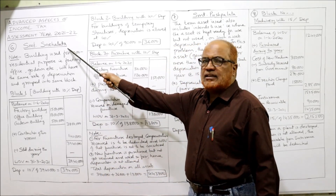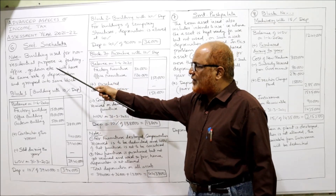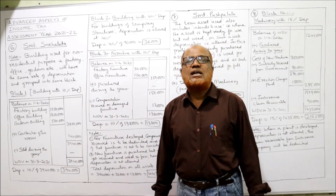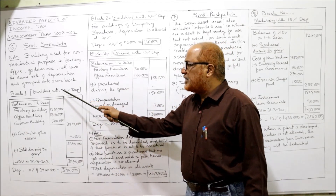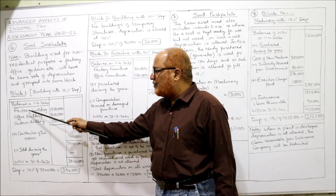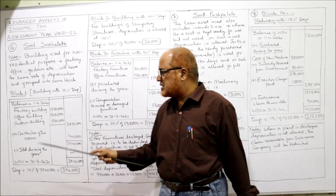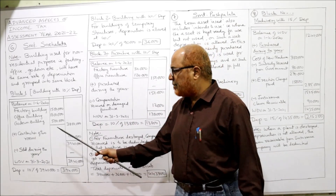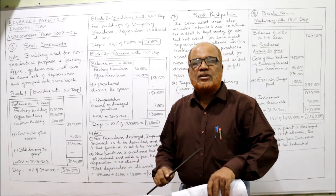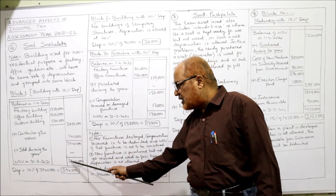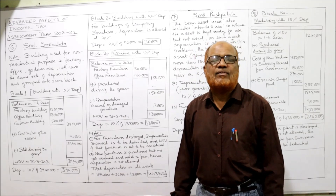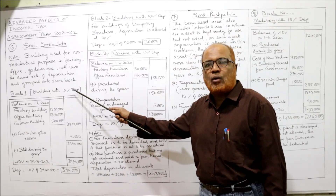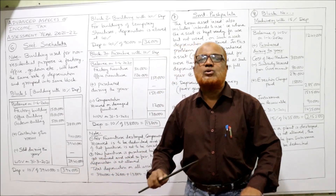Factory building, office building, and godown building are all non-residential buildings grouped in the same block at 10% rate. The building block with 10% rate: opening WDV on 1st April 2020 — factory, office, godown balances are taken in total. Add construction of two more rooms: Rs. 1,40,000. No building was sold. Closing WDV is Rs. 39,40,000 as on 31st March 2021. Depreciation at 10% on Rs. 39,40,000 = Rs. 3,94,000.